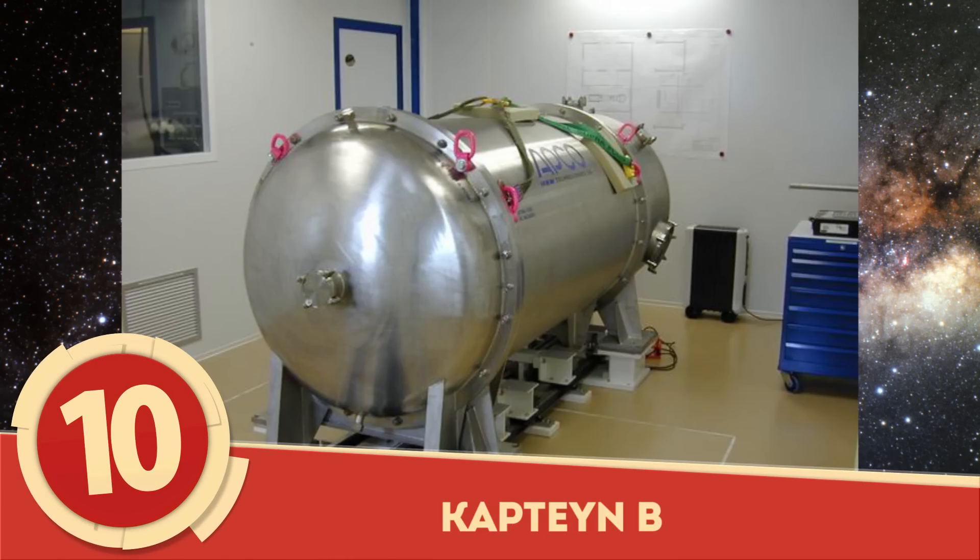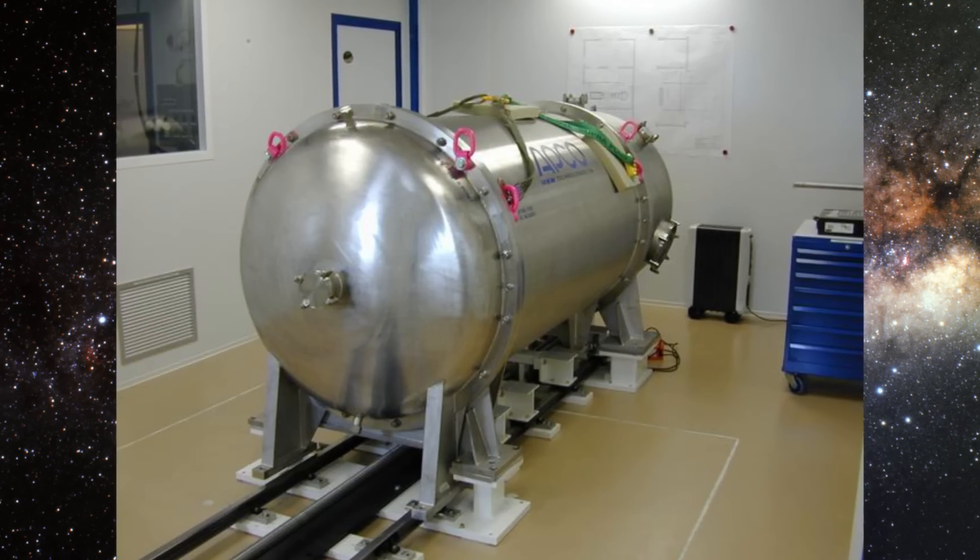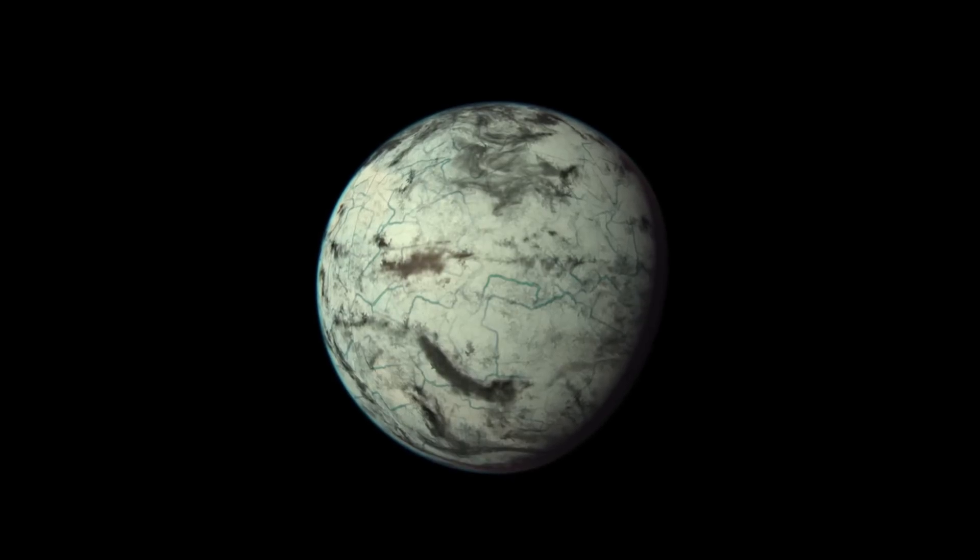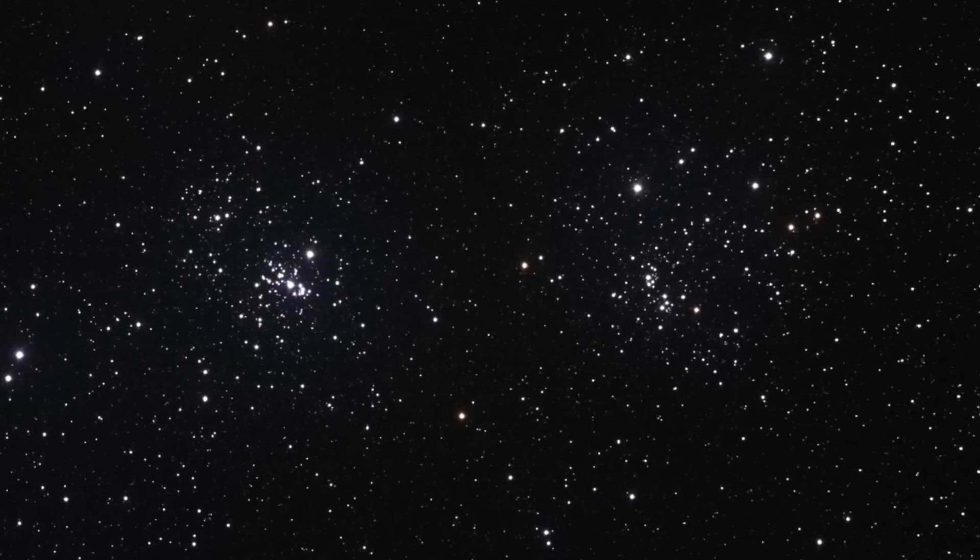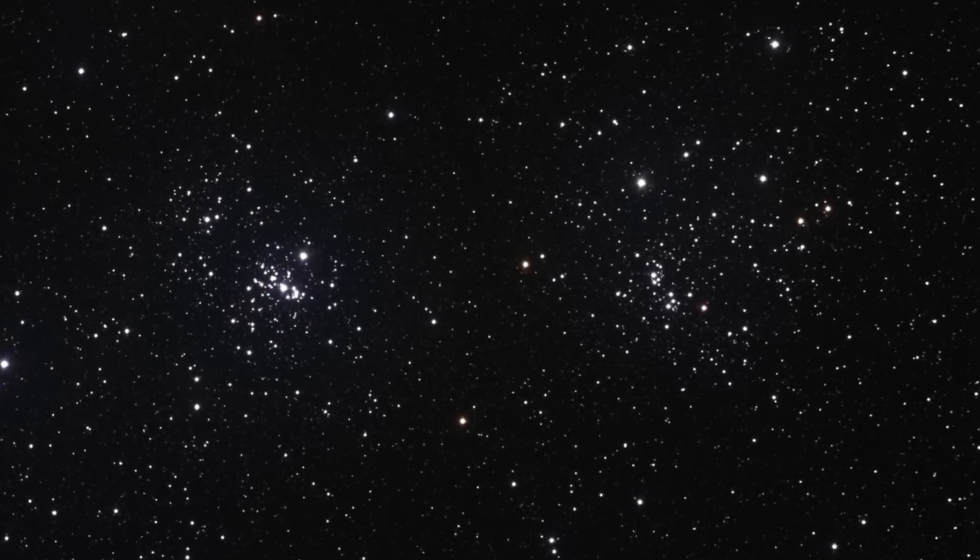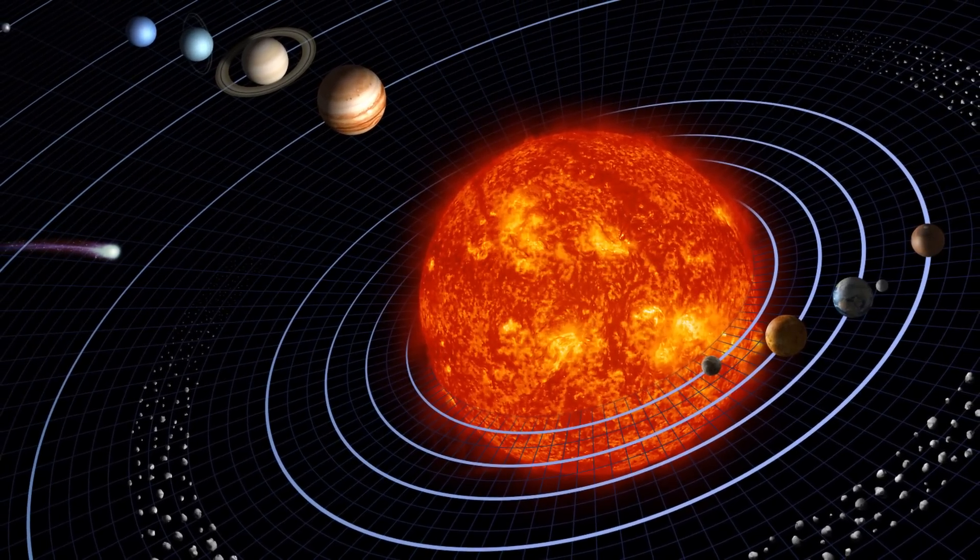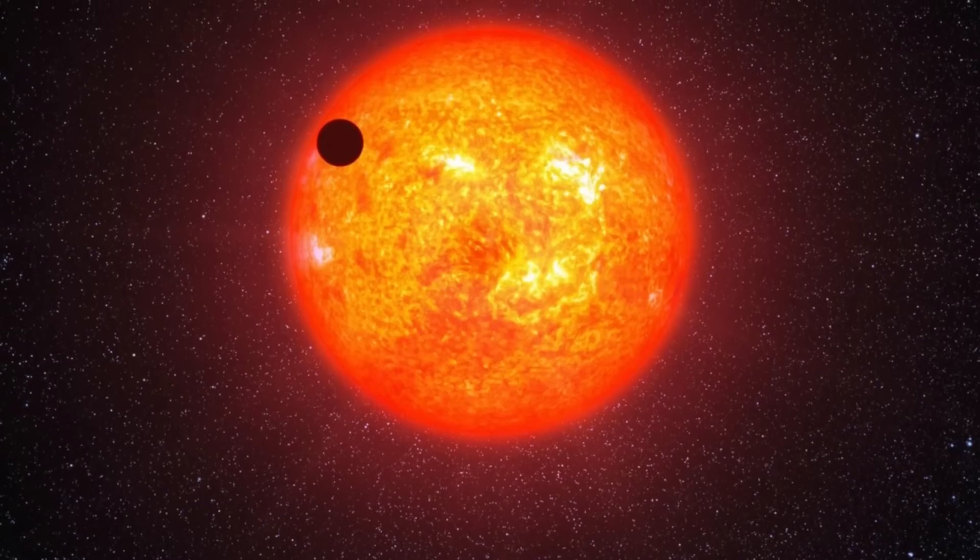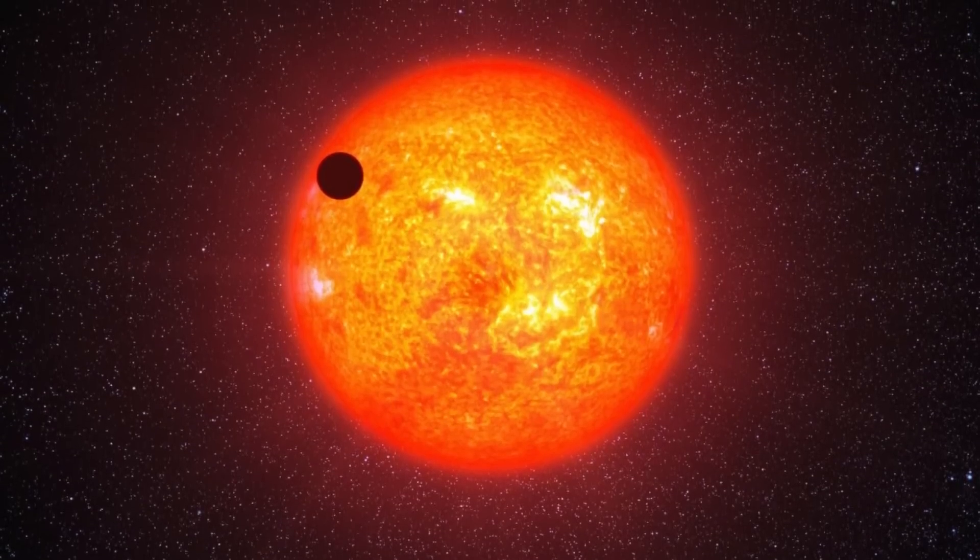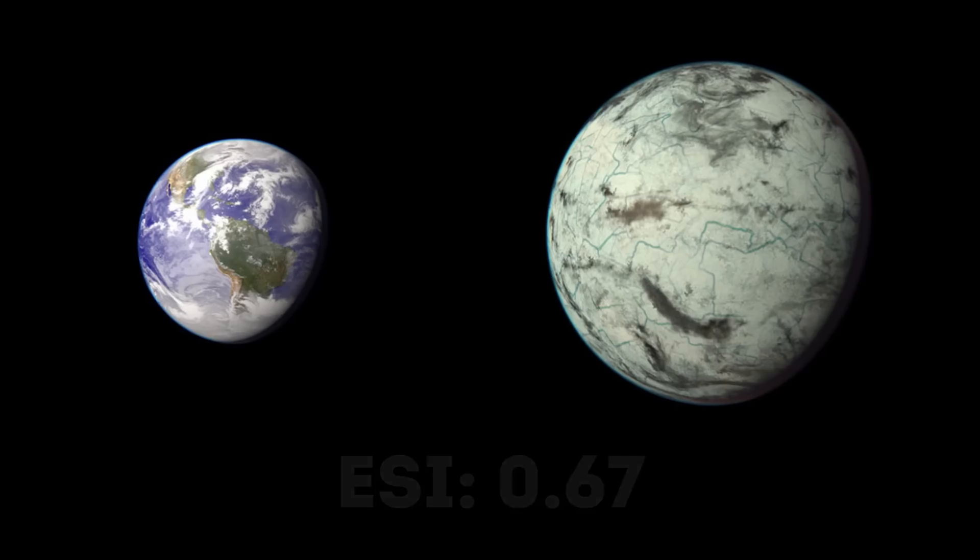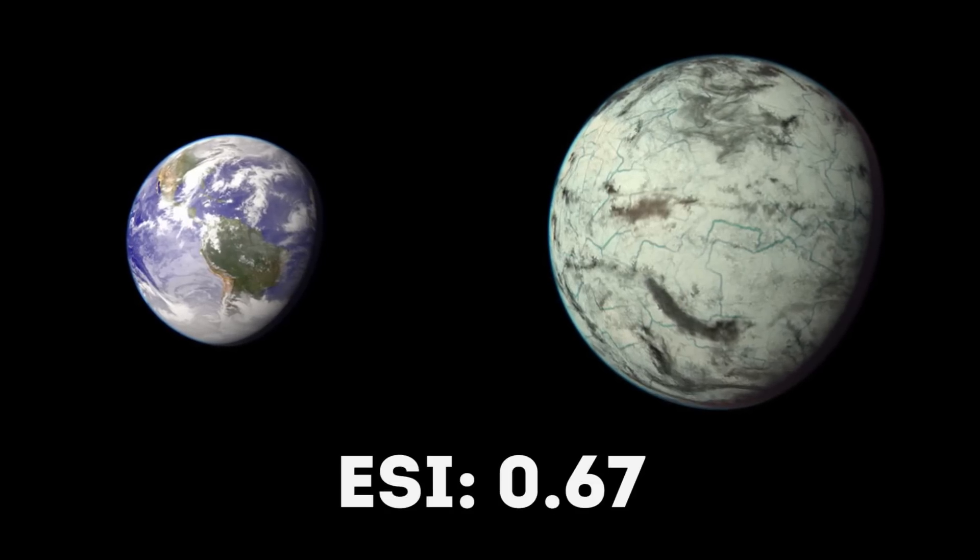Number 10: Kapteen B. In June of 2014, the high-accuracy radial velocity planet-searcher discovered the potentially habitable exoplanet Kapteen B. Found to reside in a system estimated at over 11 billion years old, about 7 billion years older than our own solar system, Kapteen B orbits the red subdwarf star Kapteen and is 12.8 light years away from Earth. Kapteen B has an ESI of 0.67.